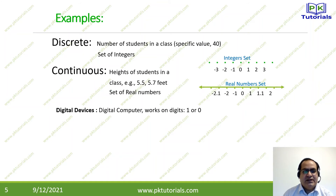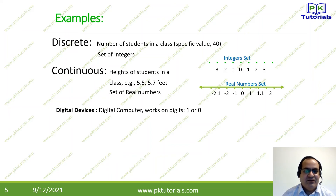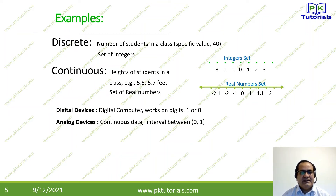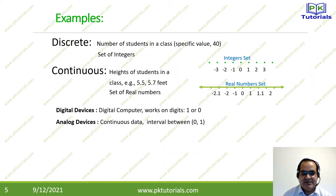We can also look at digital devices. For example, a digital computer works on digits 1 and 0 — integer set values. There is no 0.1 or 0.2; it works on whole digits where 0 means off and 1 means on. Analog devices, on the other hand, generate continuous data. The interval between 0 and 1 will be continuous, and analog devices can create such continuous data.